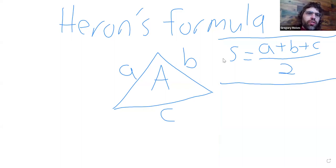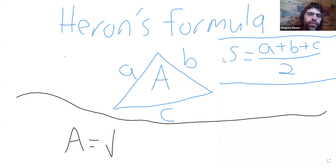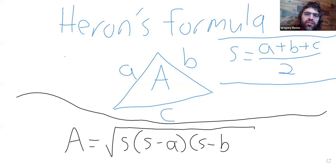And Heron's formula, let me rearrange things a little. I don't want to be scrounging for space. Heron's formula says that the area is the square root of S times S minus A times S minus B times S minus C.